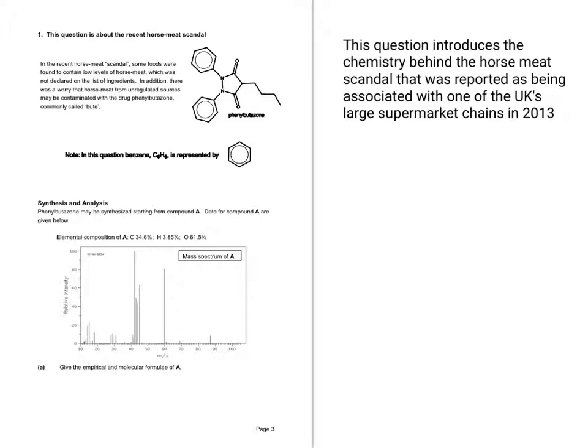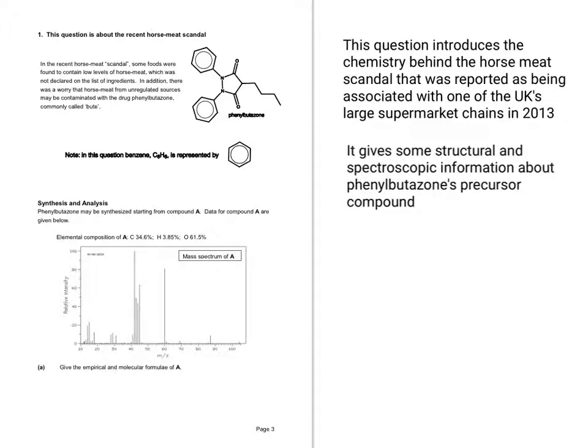So this first question is about a chemical called phenylbutazone, which was associated with the horsemeat scandal that was in the news in 2013, the year of this paper. So the question gives some information about phenylbutazone's precursor compound. It gives you the structure of phenylbutazone and the mass spectrum of the precursor.